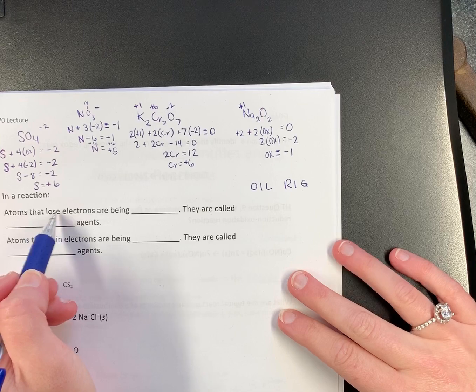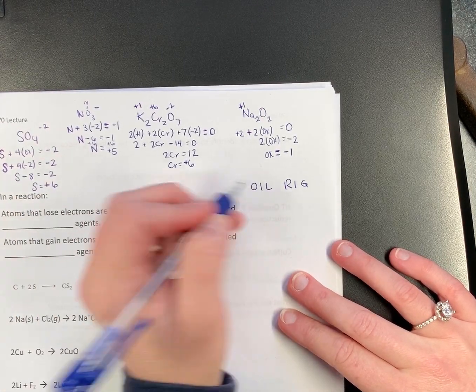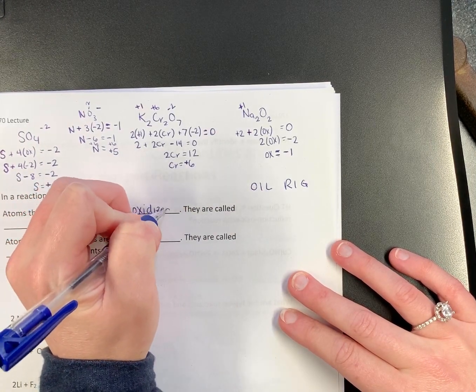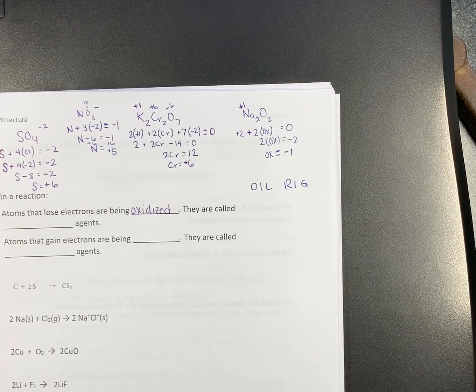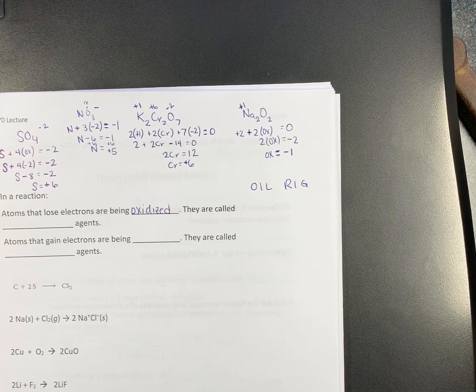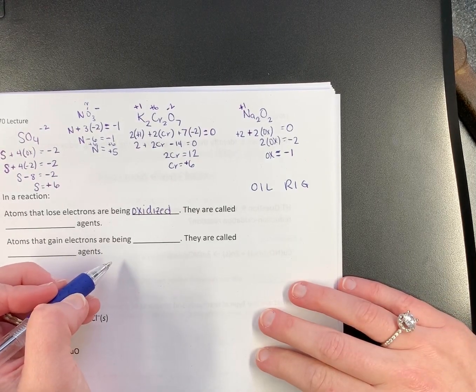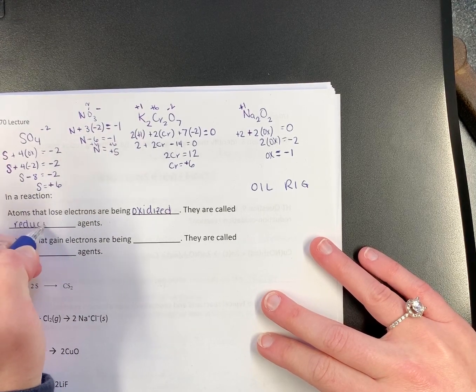Now, atoms that lose electrons are being oxidized. Oxidation is loss. So they are being oxidized. Somebody thought it would be a great idea to also call them reducing agents. Because that's not confusing at all.